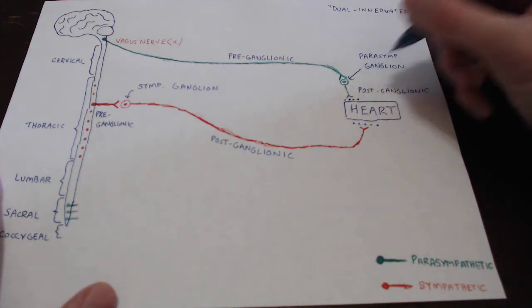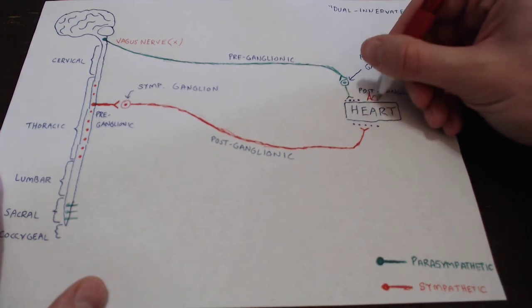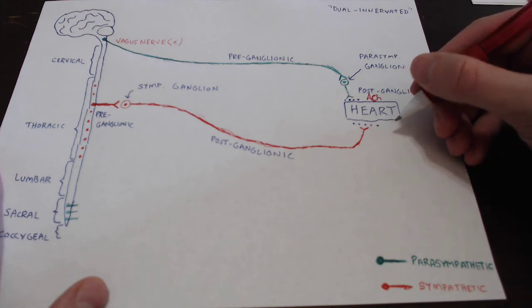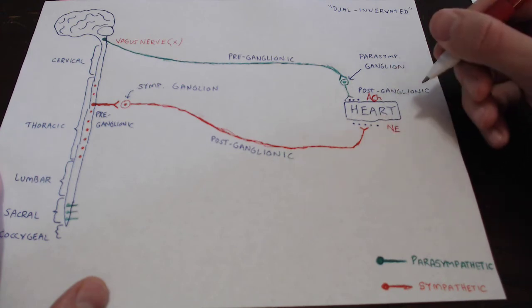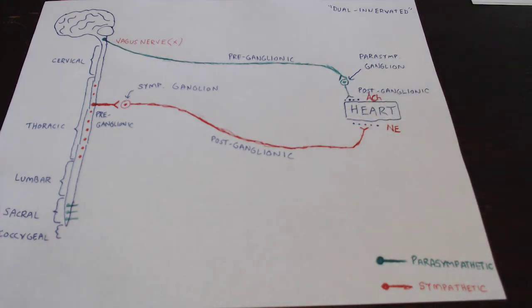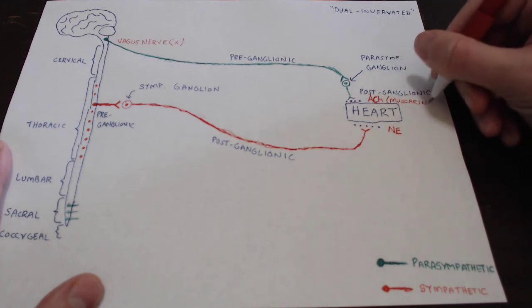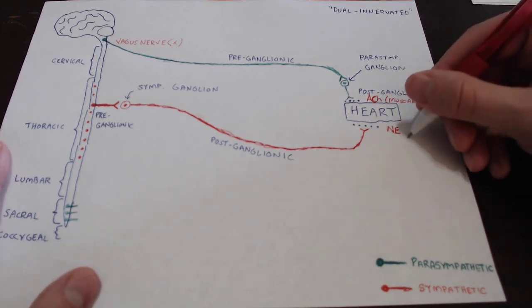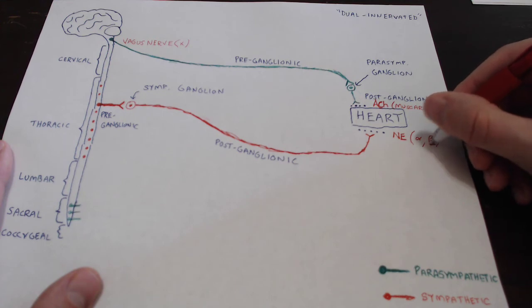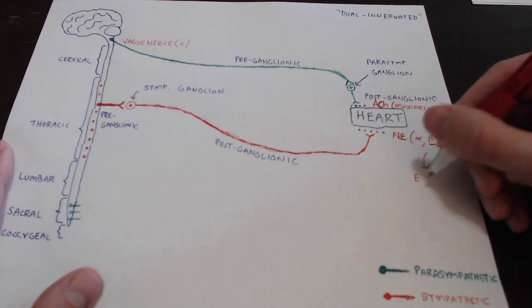On the parasympathetic side, the neurotransmitter we're going to use to lower the heart rate is acetylcholine — our most common neurotransmitter. On the sympathetic side, we cannot use acetylcholine; we are instead going to use norepinephrine. So this heart tissue actually has two different types of receptors: for acetylcholine, it has muscarinic receptors — a type of acetylcholine receptor — and for norepinephrine, we have alpha and beta adrenergic receptors, mostly the beta.